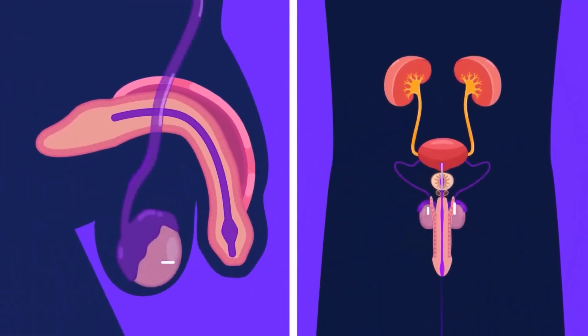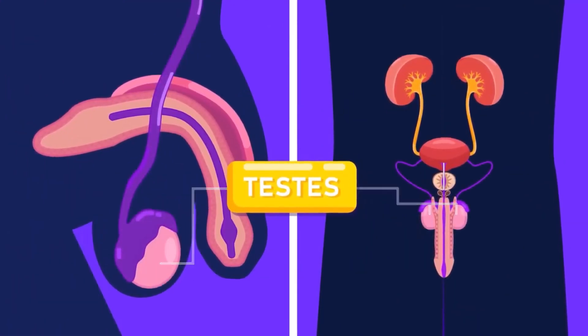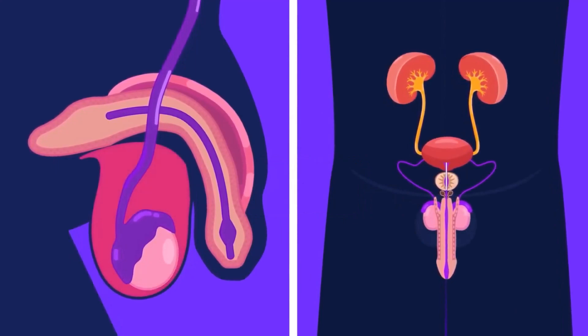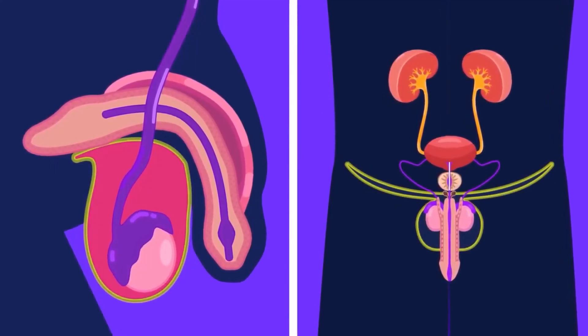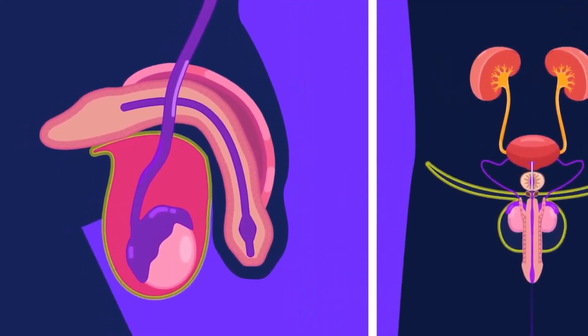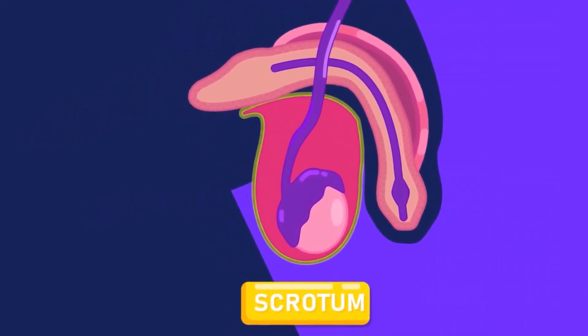To start with, there are two ovoid testes in male humans. The testes lie in a pair of sacs, which are pouch-like extensions of their skin between the thighs. These are called the scrotal sacs.